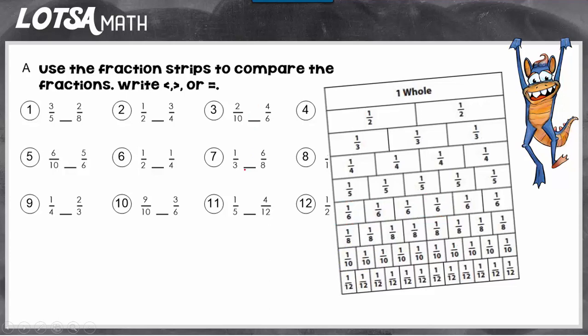Let's do one more together. We'll do six tenths and five sixths. First I'm going to find six tenths: one, two, three, four, five, six tenths. And five sixths: one, two, three, four, five. I can see that five sixths is greater than six tenths.